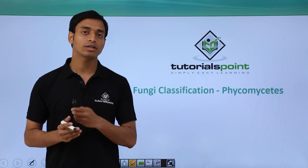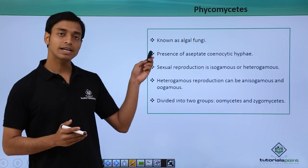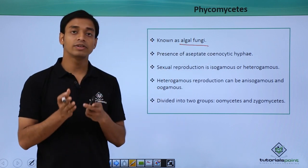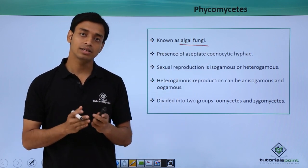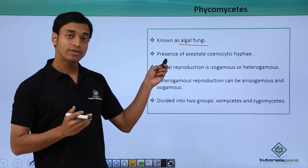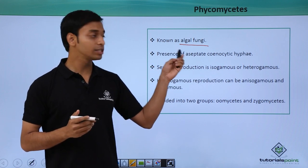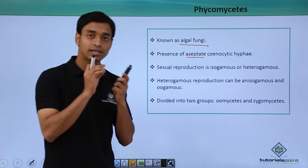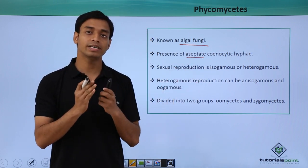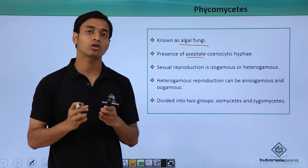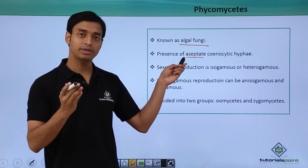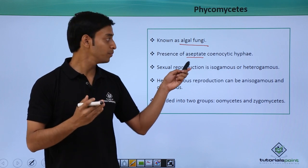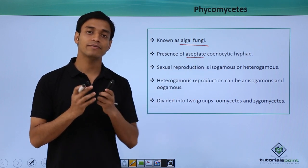Phycomycetes are also known as the algal fungi — that is their common name. They have the presence of aseptate syncytial hyphae. Aseptate means the hyphae are not separated by the presence of a septum or septa, so the protoplasm is continuous in these hyphae. They are mostly branched.